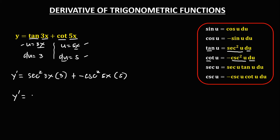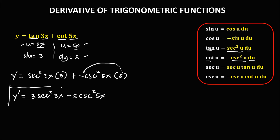Then simplify: this becomes 3 secant squared 3x, then this 5 times negative 1, that's negative 5, then cosecant squared 5x.